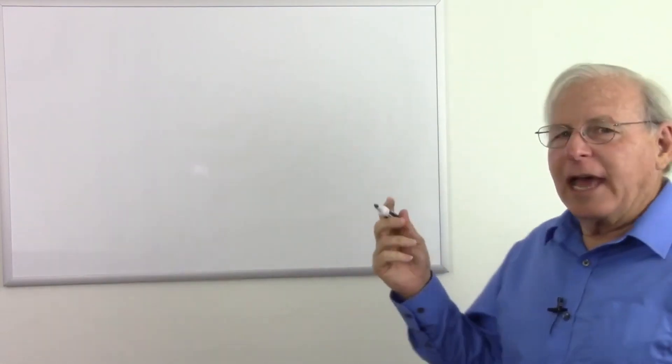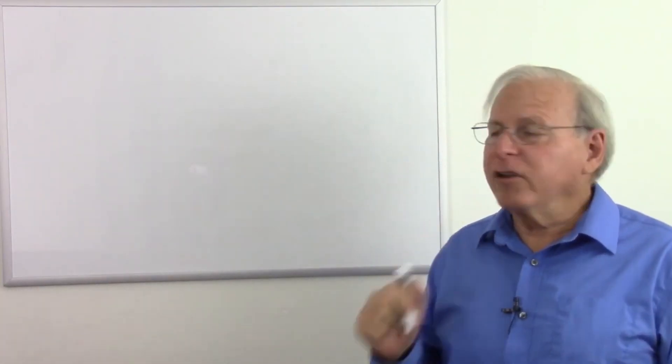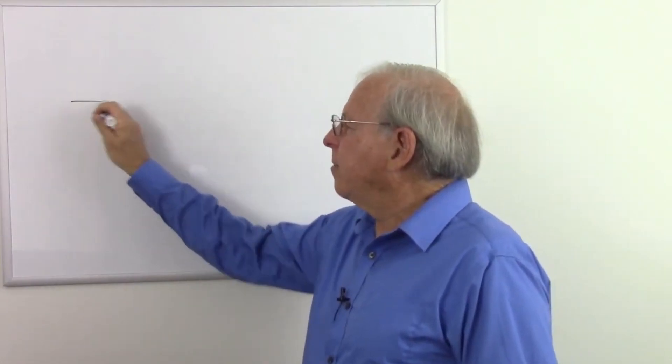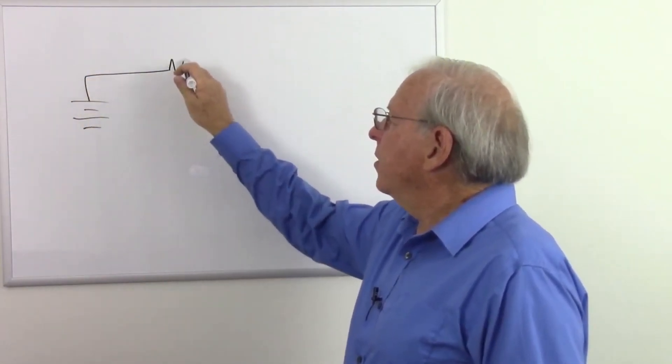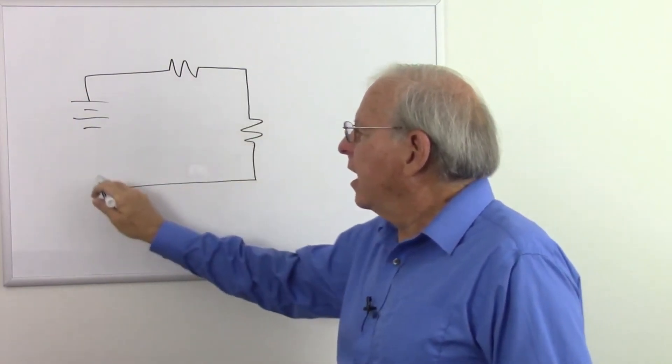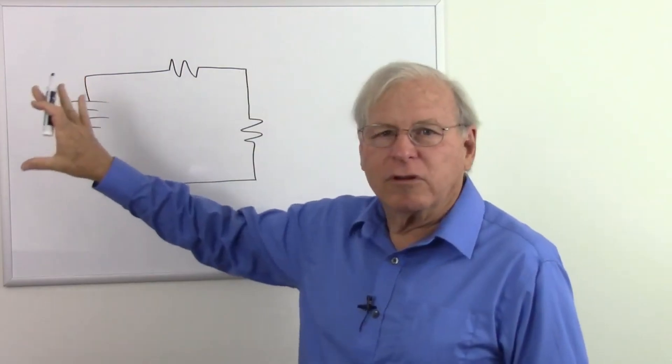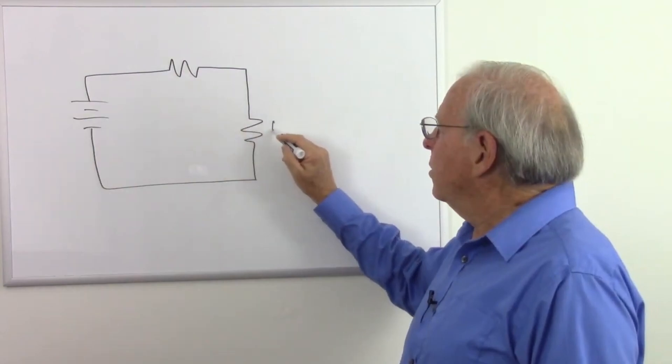So let's take a look at how a potentiometer might be used as a variable resistor in a series circuit. So here is a battery, and let's put a resistor here, and let's put another resistor here, and I'm not going to put any voltages here. I don't think I need to for this, and let's say that this is our load.